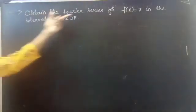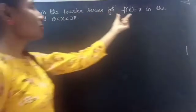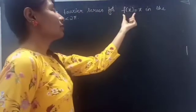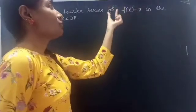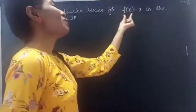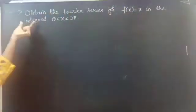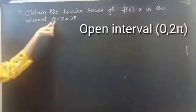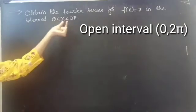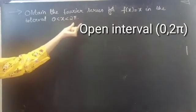Problem: obtain the Fourier series for f(x) equals x in the interval 0 less than x less than 2π.